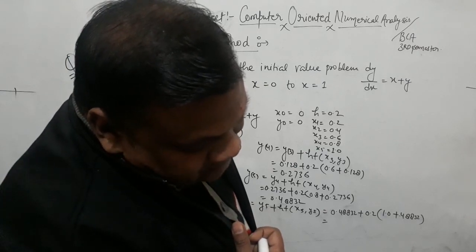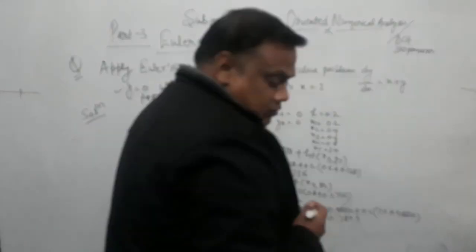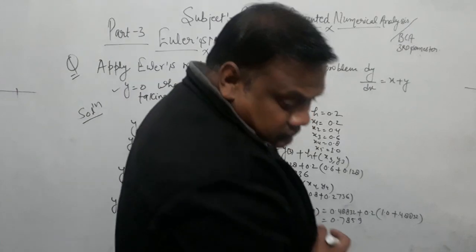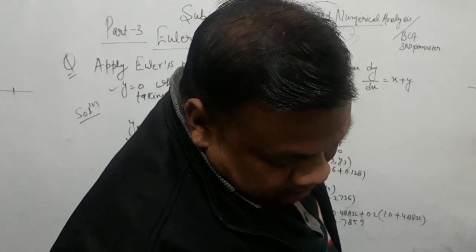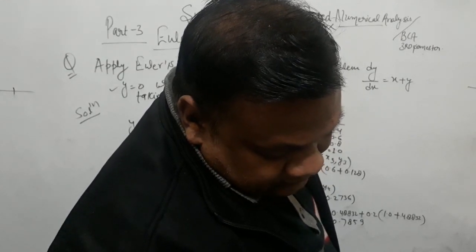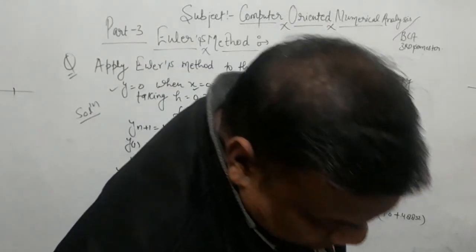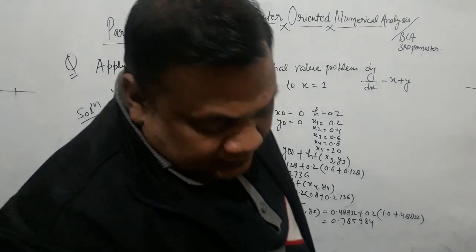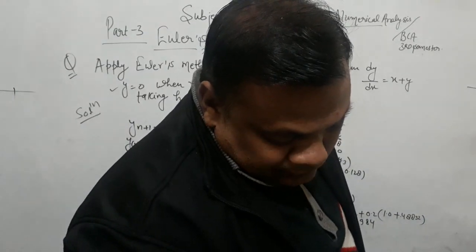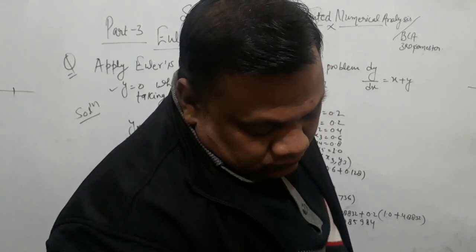So y5 — the answer — is 0.7859. The final value at x = 1.0 is 0.7859.